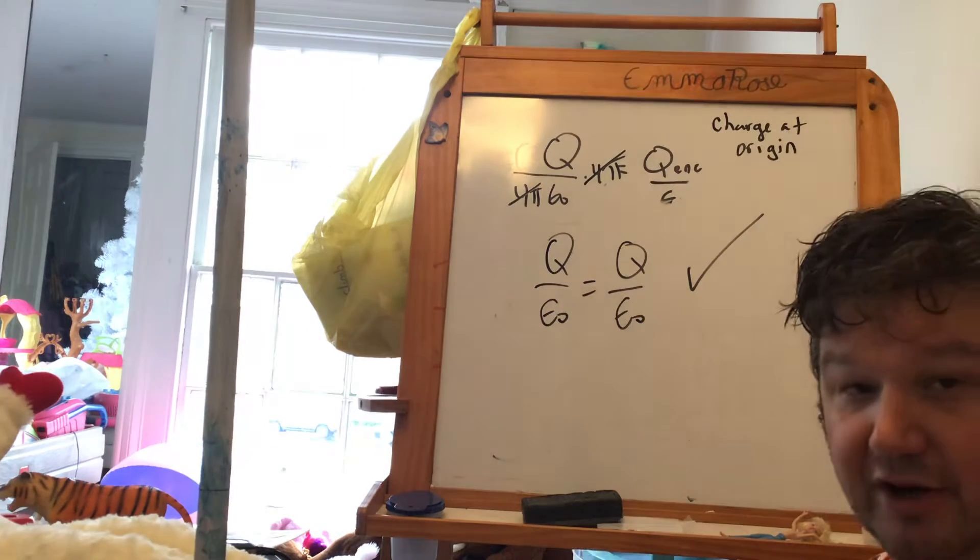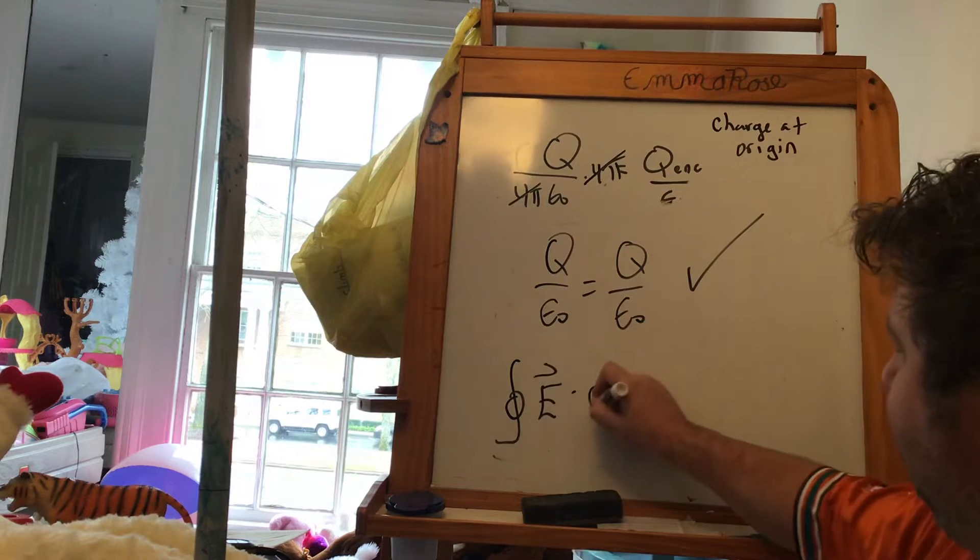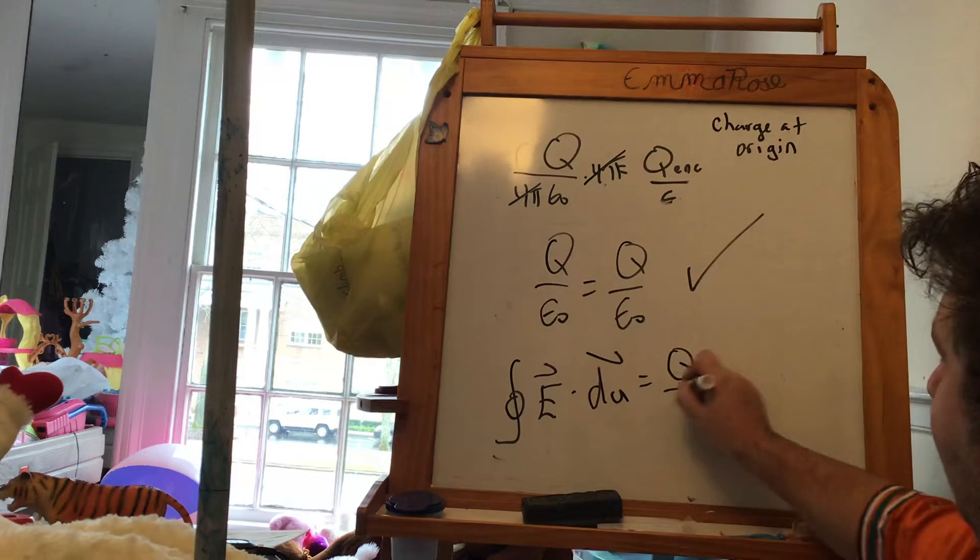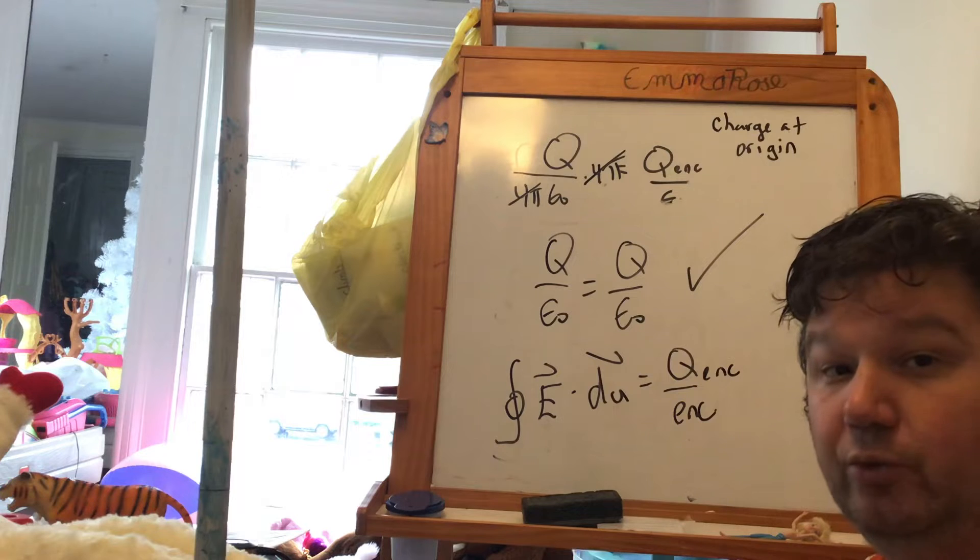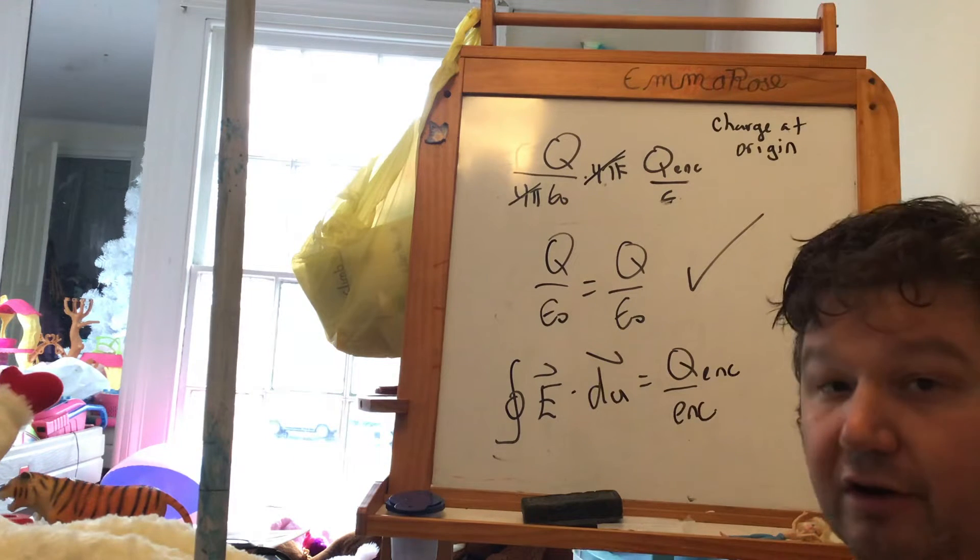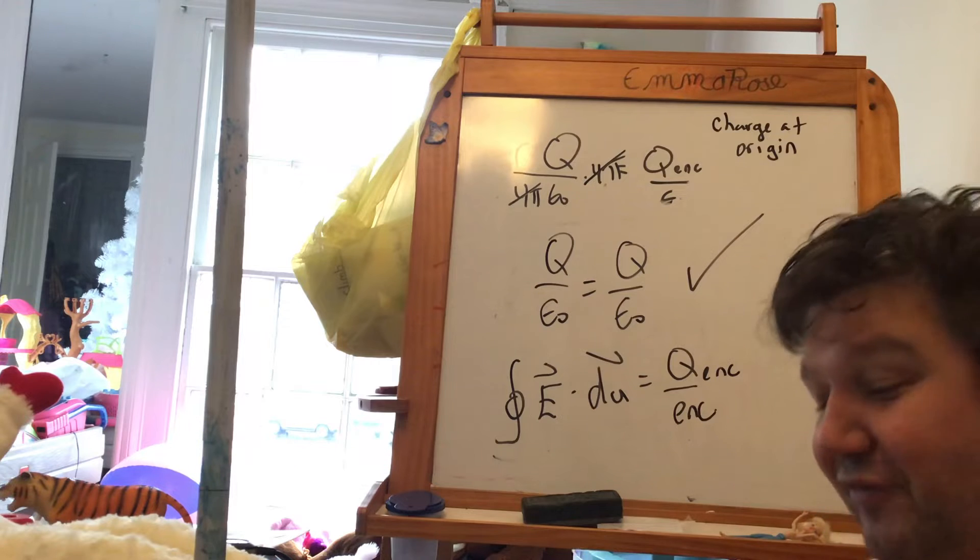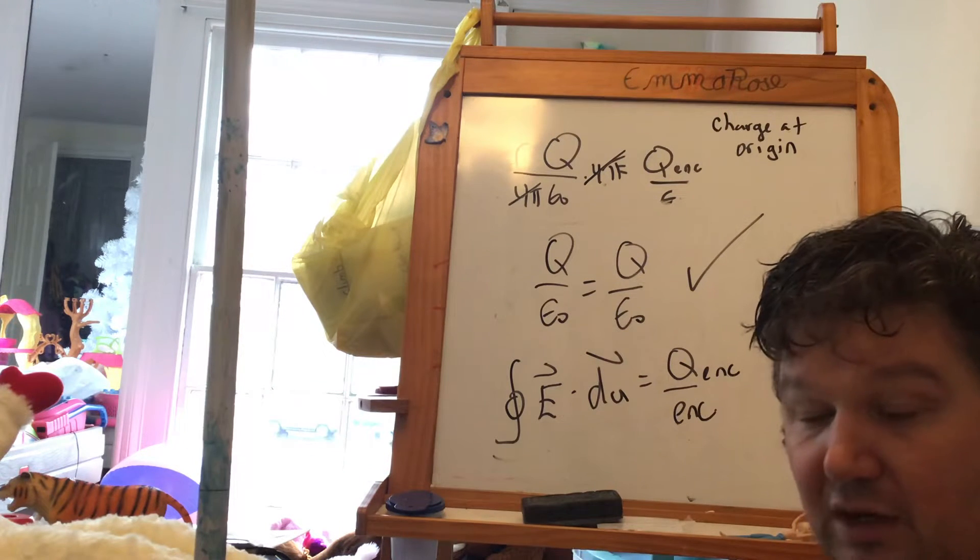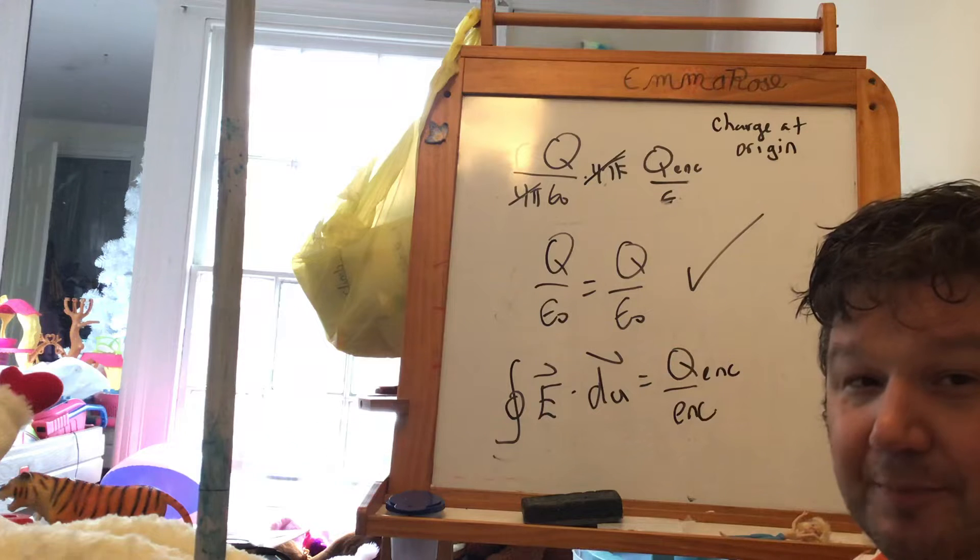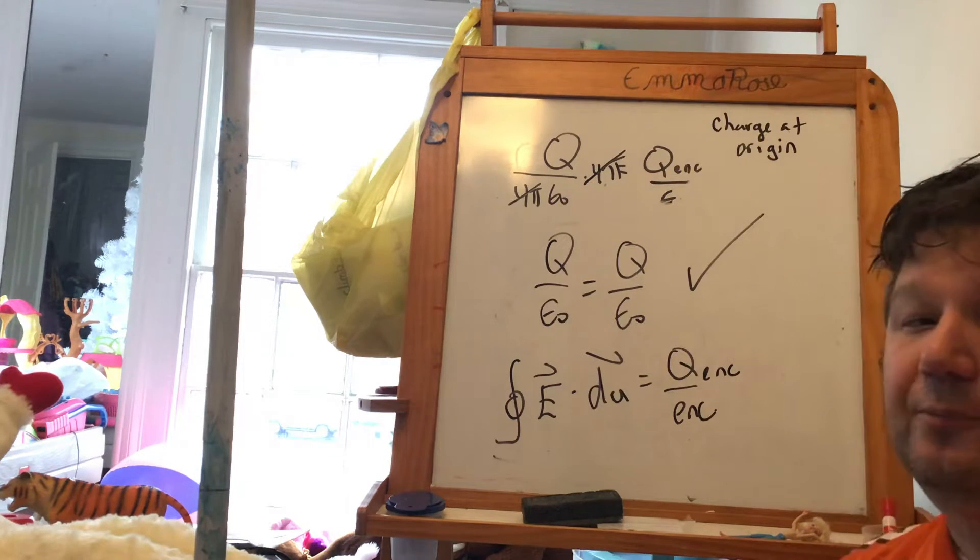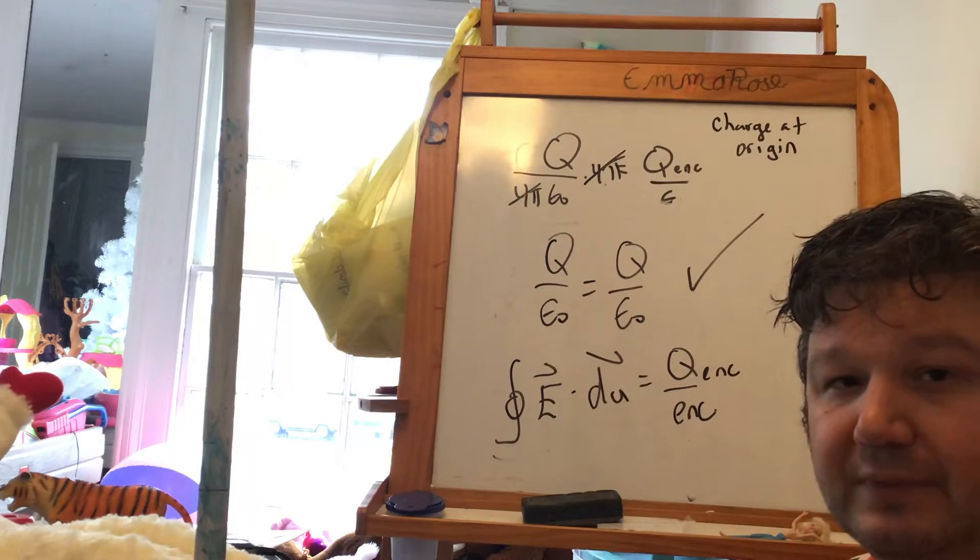But I pulled a fast one on you. Because when we look at Gauss's law, we always make the note that this is true for no matter what surface you use. It's true if you're using a sphere. But it's also true if you're using whatever surface. And so what I showed you was that if I had one single point charge at the center, it goes through and shows that Coulomb's law and Gauss's law are connected.